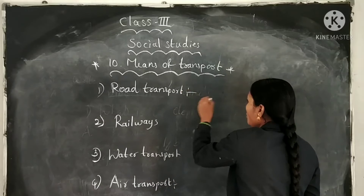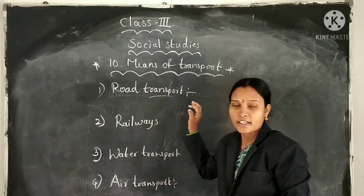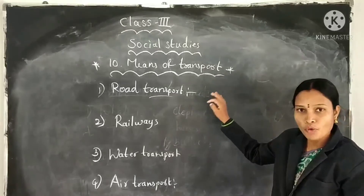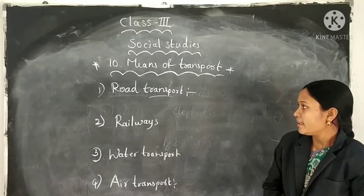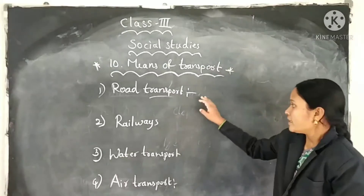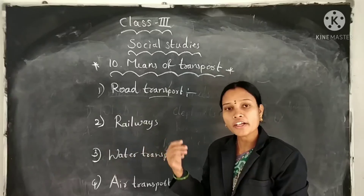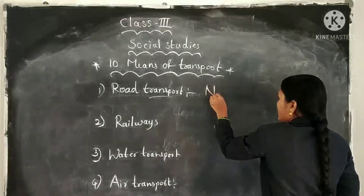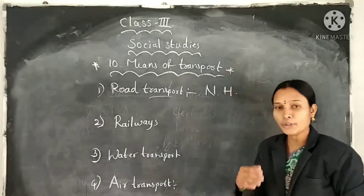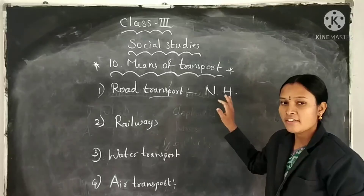Now let us discuss road transport. Vehicles such as buses, cars, motorcycles, and scooters move on the road. They run on petrol, diesel, or electricity. The major roads which connect one state to another are called national highways. They are also called state highways, and they connect important cities within a state.